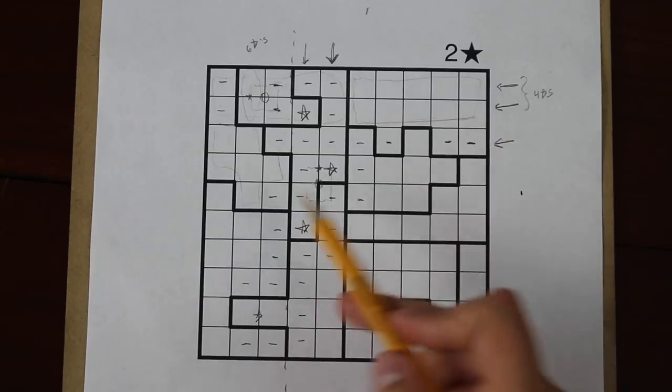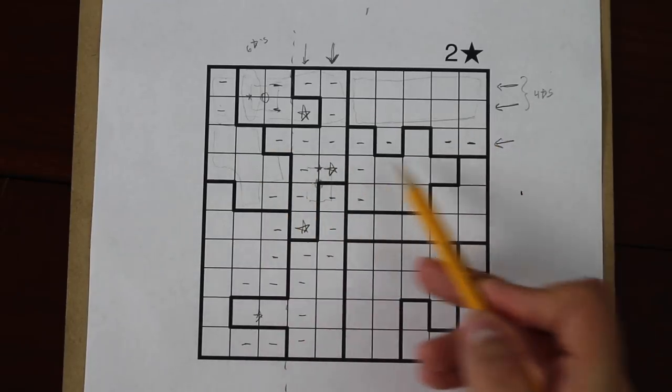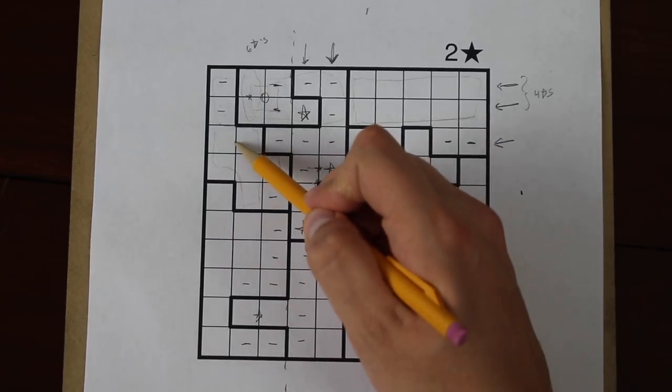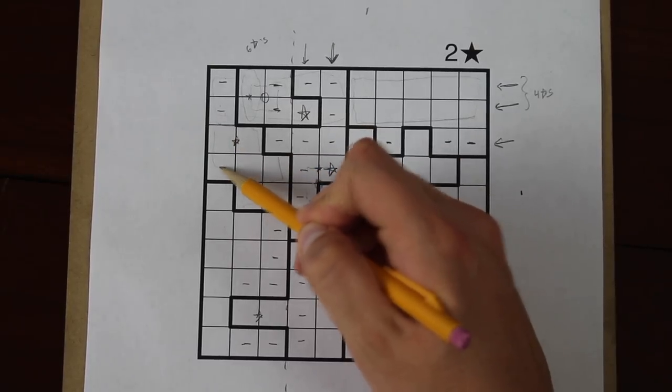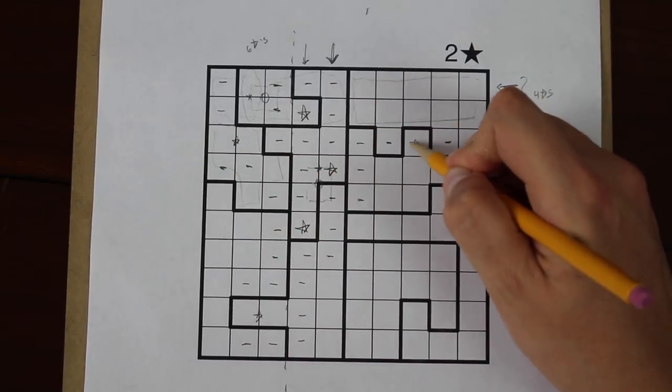Now looking at the third row, we need to fit two stars into it somehow. There can only be one star here, so the other must go here.